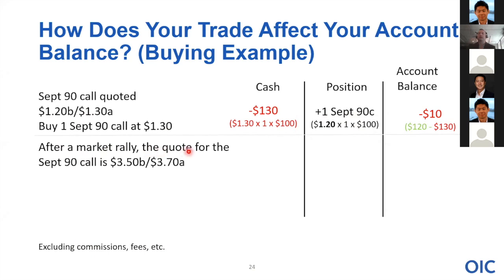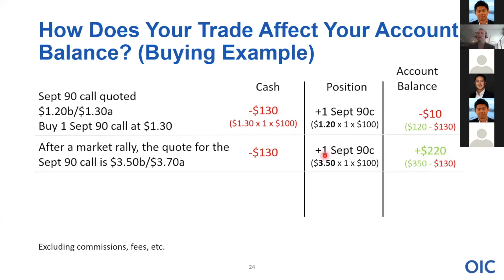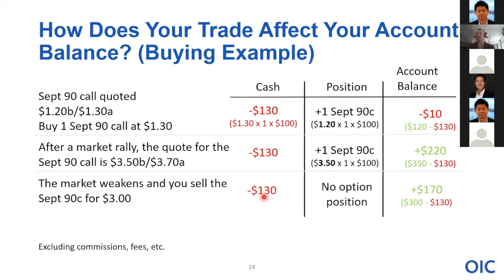Say the stock market rallies and the Sep call goes up to $3.50 bid, offered at $3.70. Your cash debit is still $130 — that didn't change. But now the current value of your option has changed, and your account balance shows unrealized profits. Some more time passes, the stock sells off, and you get out by selling for $3.00. Your cash went down by $130, but now you receive $300 back. You have no option position, and your net account balance has increased — it's now a realized profit: $300 minus $130.